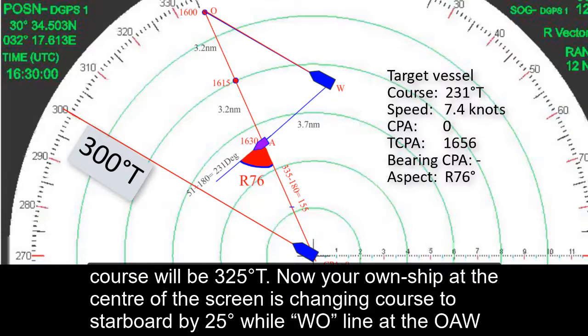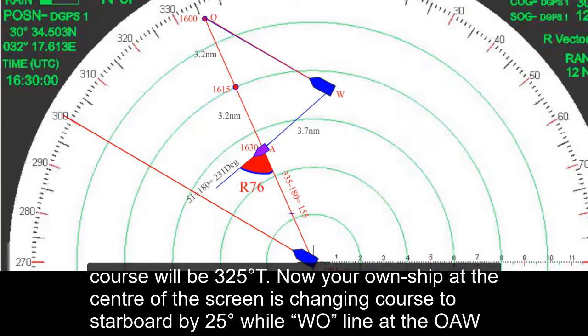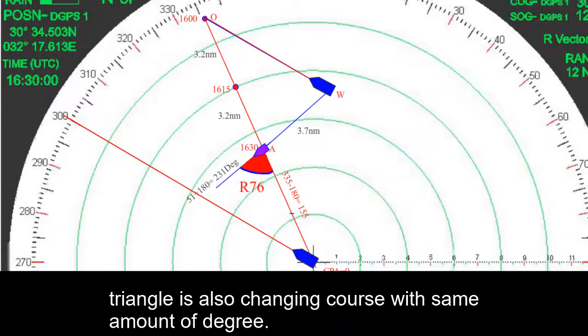Now your own ship at the center of the screen is changing course to starboard by 25 degrees, while WO line at the OEW triangle is also changing course with the same amount of degrees.